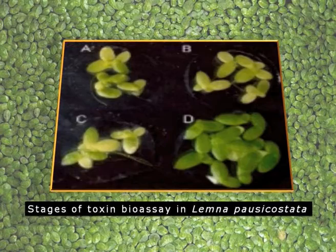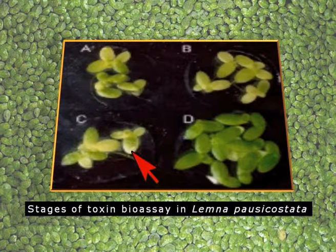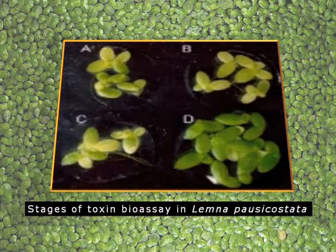Toxin bioassay can also be carried out using a unique hydrophyte like Lemna paucicostata. The toxin will induce chlorotic lesions and then there will be a browning reaction. Depending upon the number of leaves which show chlorotic lesion or browning reaction, we can determine the effectivity of that particular toxin.